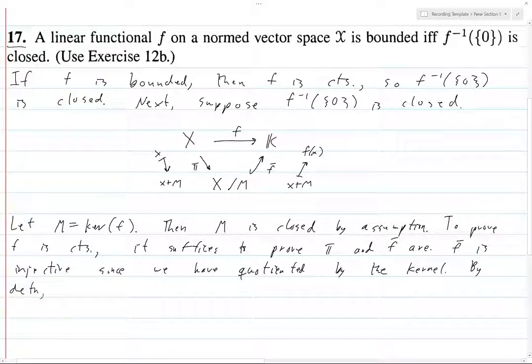By definition, the norm that we put on x mod m is going to be less than or equal to norm of x, because this is the infimum over all elements of m, of norm of x plus m. Since 0 is in m, because 0 maps to 0 because f is linear, this is the infimum over all y in m of norm of x plus y.